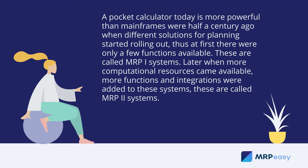Thus, at first, there were only a few functions available. These are called MRP1 systems. Later, when more computational resources came available, more functions and integrations were added to these systems. These are called MRP2 systems.